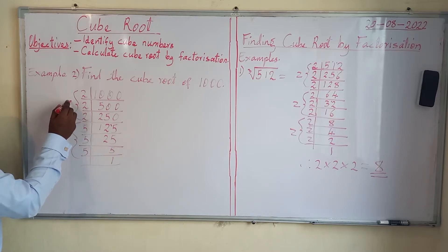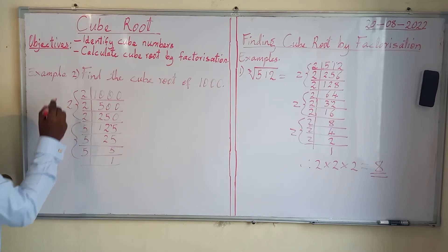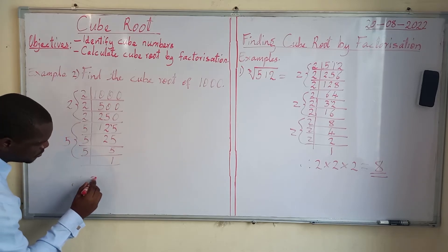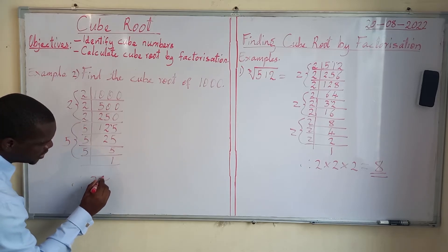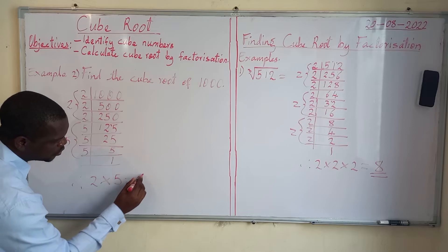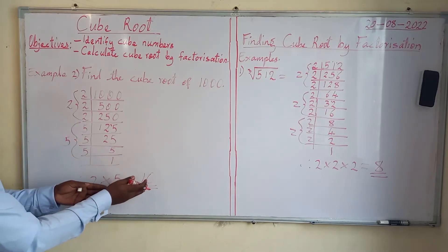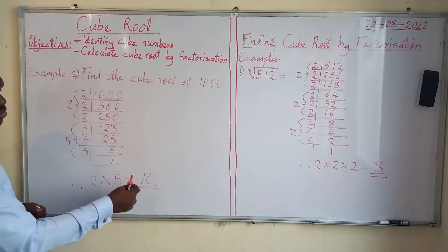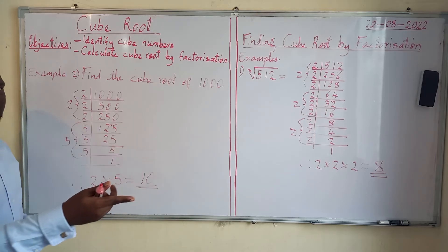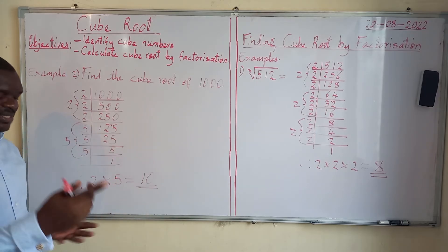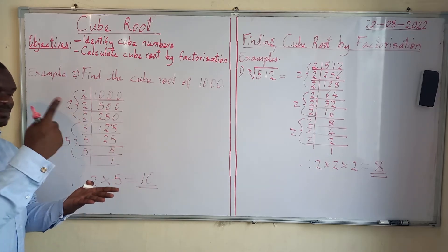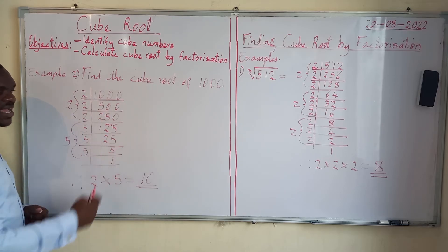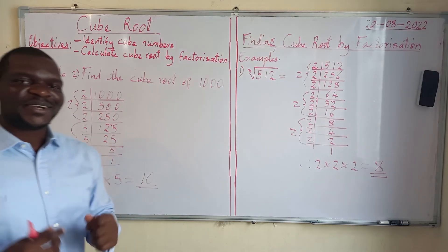We take one number from each group: 2 from the first group and 5 from the second. Therefore, our cube root is 2 times 5, which equals 10. To verify, multiply 10 by itself twice: 10 times 10 times 10. If the answer is 1,000, then our answer is correct.